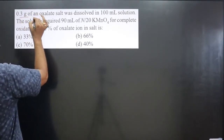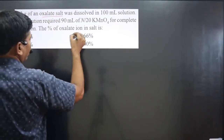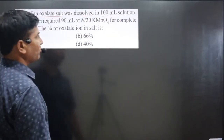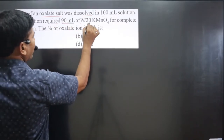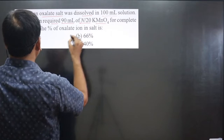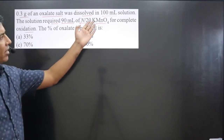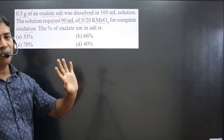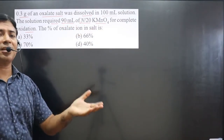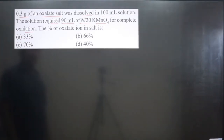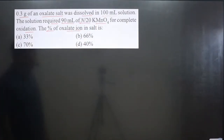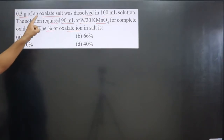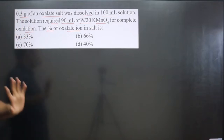The question says 0.3 gram of an oxalate salt was dissolved in 100 mL solution. The solution required 90 mL of N/20 KMnO₄ for complete oxidation reaction. KMnO₄ is a strong oxidizing agent, so it will oxidize any substance coming in contact with it.